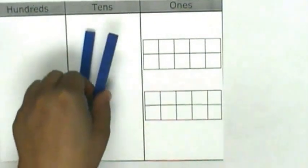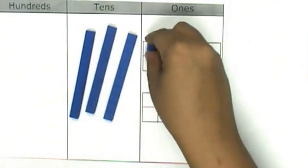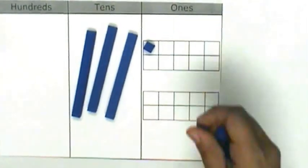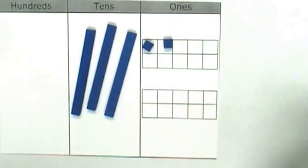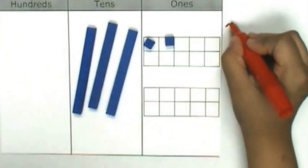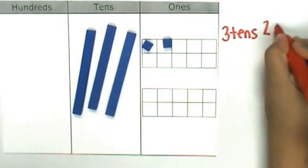10, 20, 30, 31, 32. 32 is composed of three tens and two ones.